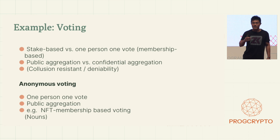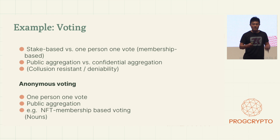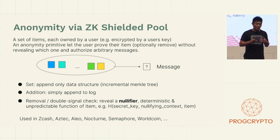First, let's look at anonymous voting — where everybody has one vote and you'd like to vote yes or no without revealing how you voted. In this setting, we can tolerate public aggregation. A good example is NFT membership-based voting. The tool we have for this, which is really well-known, is ZK nullifier pools.